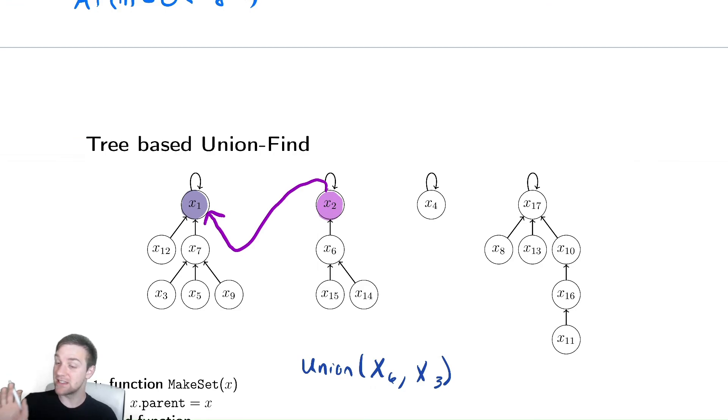But, these are our methods. We need to still analyze how long they take. So, we're going to need to do potentially something similar to what we did for the linked list to analyze the runtime for our tree-based union find.